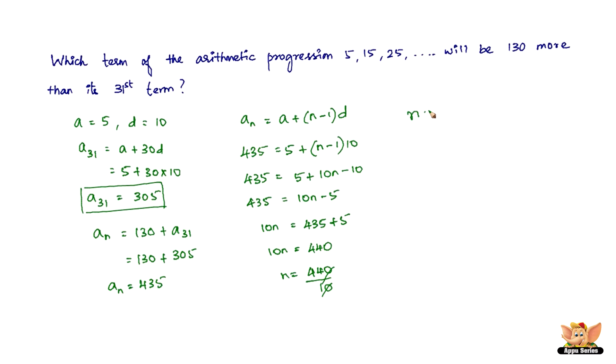Therefore, 435, which is 130 more than the 31st term, is the 44th term of the given AP. Once you have a and d, you can find anything. It's all about analyzing the data, and the first thing that should come to mind is somehow finding a or d.